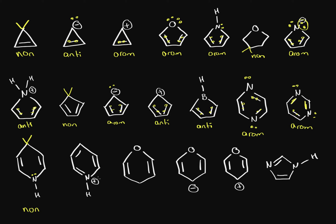On this last one we have a nitrogen with a positive charge; they're all sp2 atoms. We have this lone pair being used as the pi bond so it is in the pi orbital. We have 1, 2, 3, 4, 5, 6 electrons in the pi orbital system, so this is aromatic.